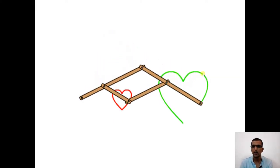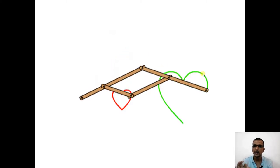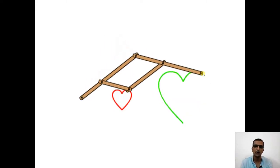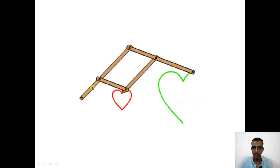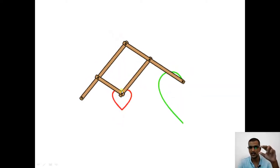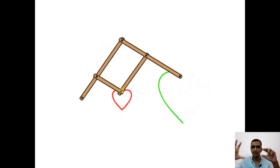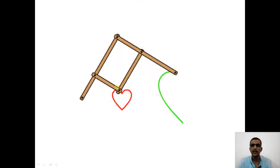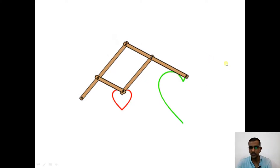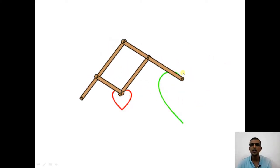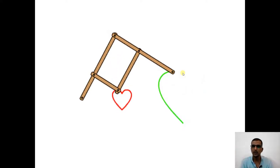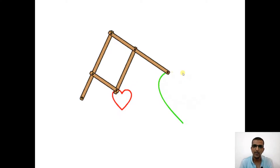The basic idea of using a pantograph is either to reduce or increase the scale of a shape or a configuration. I have a small heart shape that is already available to me but on a smaller scale. Now I want the same shape on a bigger scale. One of the links of the mechanism is going to trace that small heart in red color, and another point on the same mechanism will give me a scaled-up version - a bigger heart. So it is a mechanism that I can use to either scale up or scale down the paths available to me.